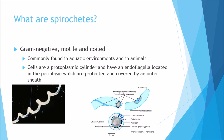So let's start off with what are spirochetes. Spirochetes are gram-negative, motile and coiled bacteria, as you can see here in this picture. They are very commonly found in aquatic environments and also commonly found in animals, which will then get transmitted over to humans.